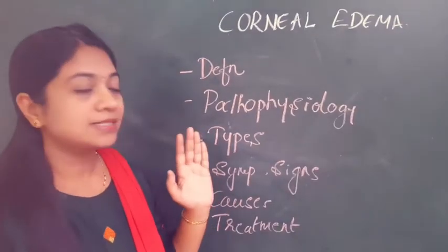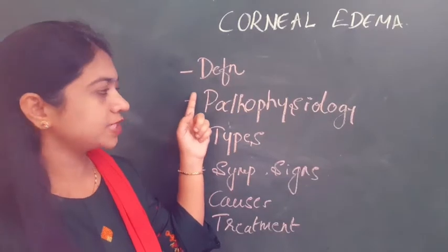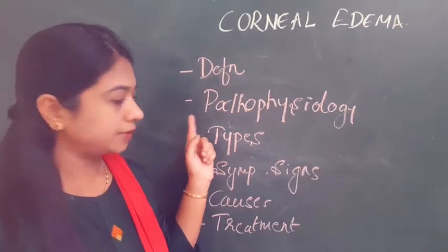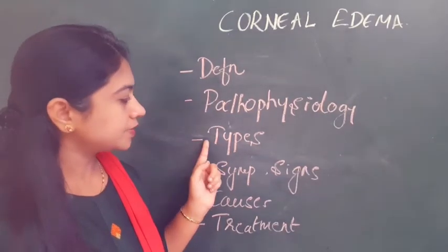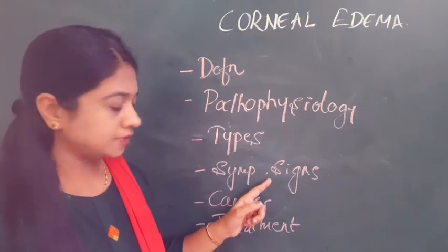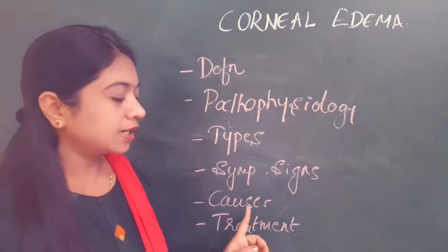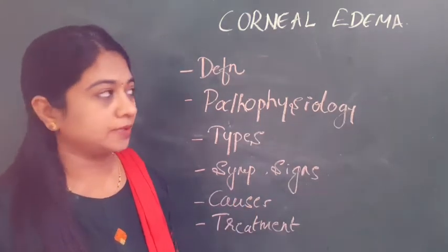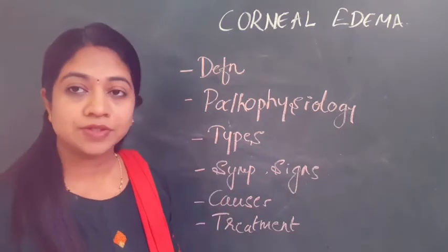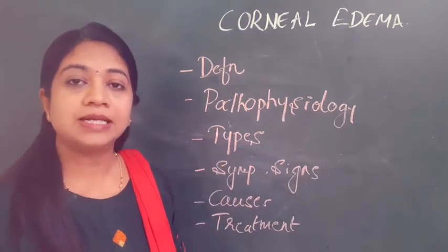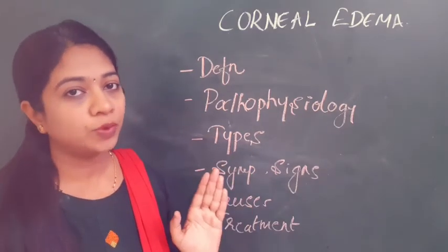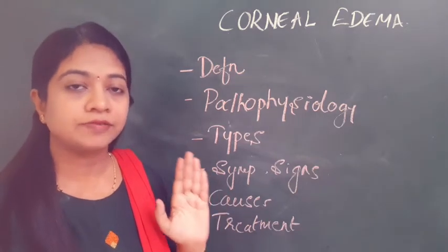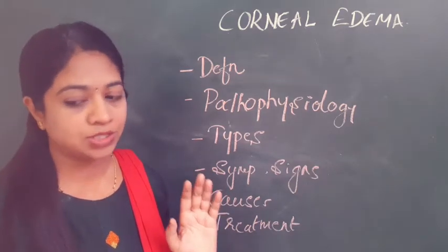We will discuss corneal edema under the headings of: definition, pathophysiological process, types, symptoms and signs, various causes, and treatment. The definition of corneal edema is the accumulation of fluid in the cornea — specifically in the layers of the epithelium and the stroma.